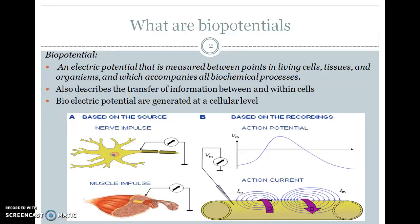The entire body contains 100 trillion cells. Of these, 25 trillion red blood cells transport oxygen from the lungs to tissues. Generally, the structure of a cell cannot be seen by the naked eye but can be viewed only through a biological microscope. Biopotentials are generated at the cellular level.